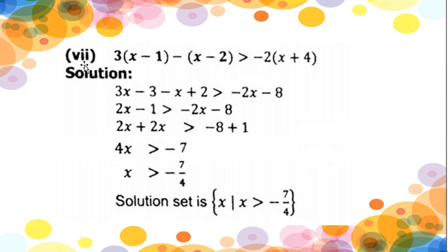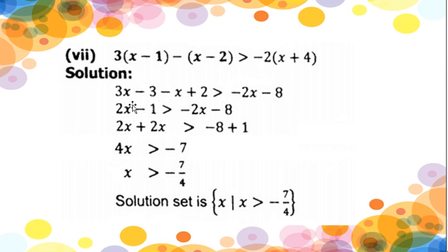Now we are moving to part 7: 3(x - 1) - (x - 2) is greater than -2(x + 4). Again applying the distributive law — if any number is multiplying outside the bracket, it multiplies with all the values. So: 3x - 3, and due to the negative sign outside the second bracket all signs inside change — so: -x + 2. Greater than: -2x - 8. Now observe that 3x and -x have opposite signs — they will be subtracted and it becomes 2x. And the constants -3 and +2 also have opposite signs — subtracted to give -1. So: 2x - 1 is greater than -2x - 8.